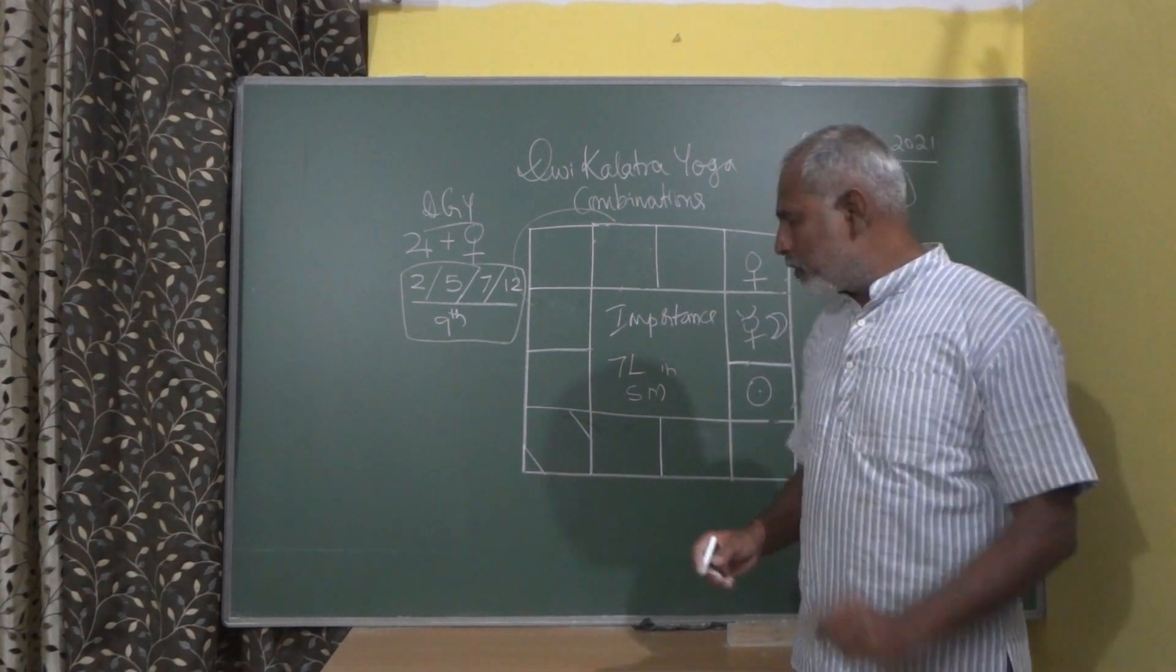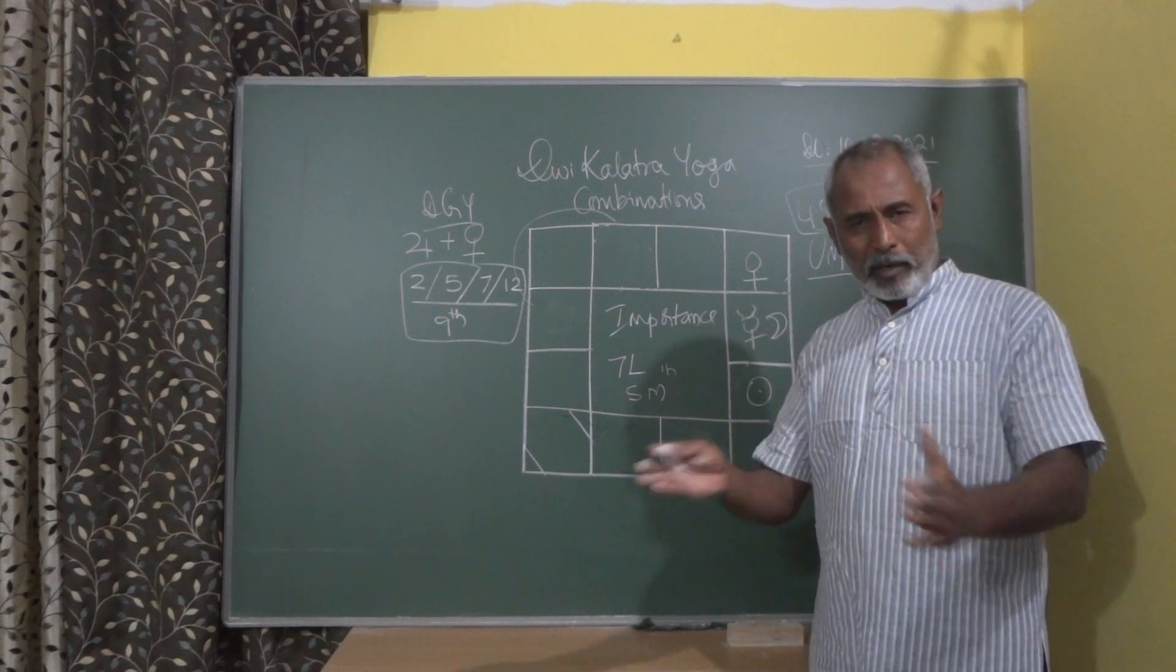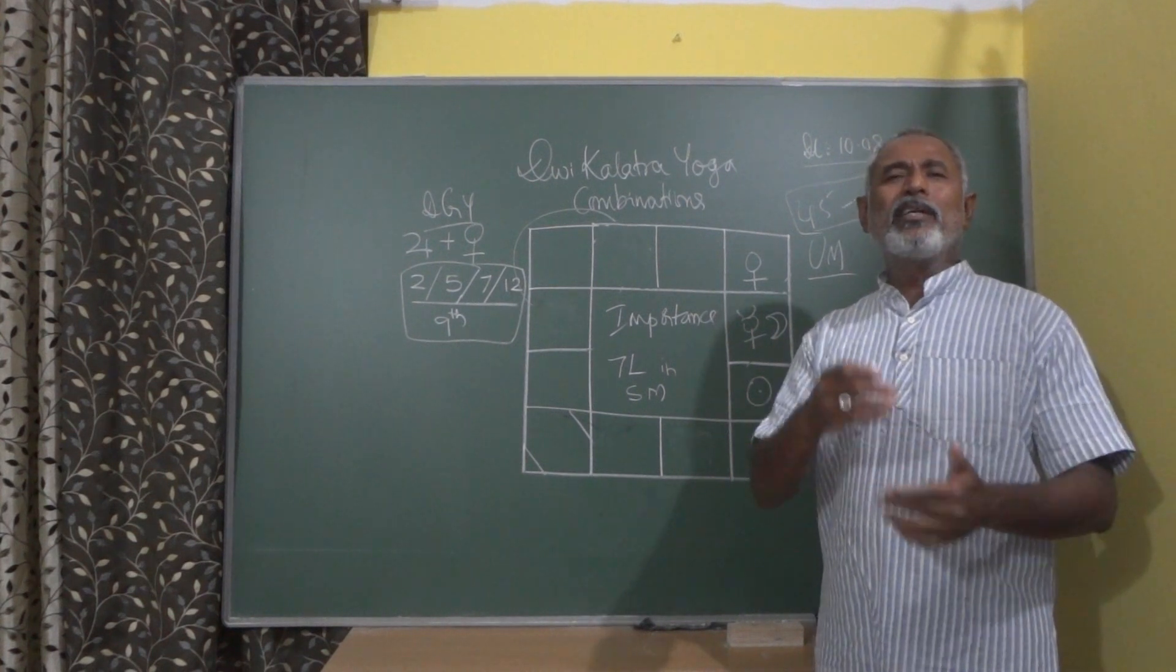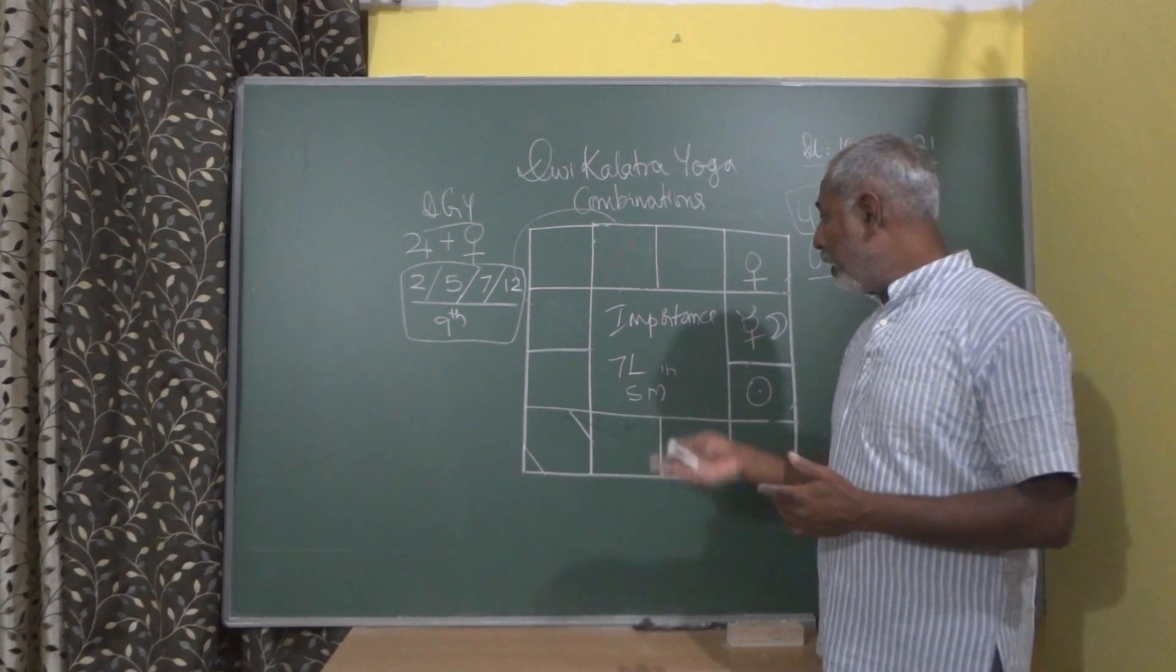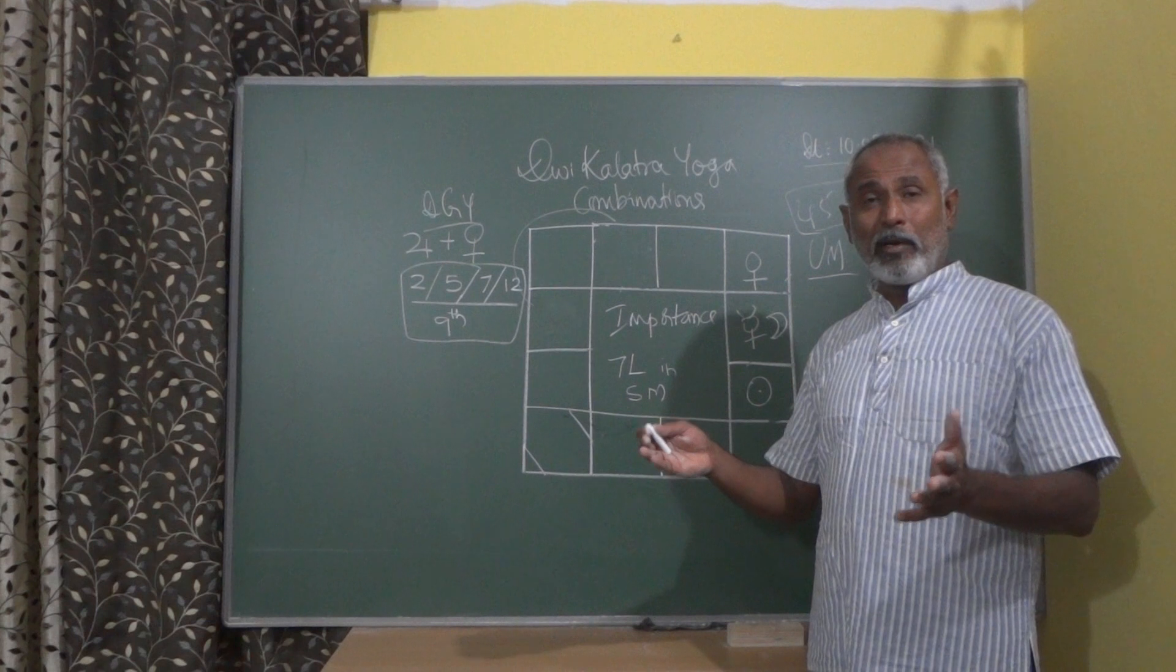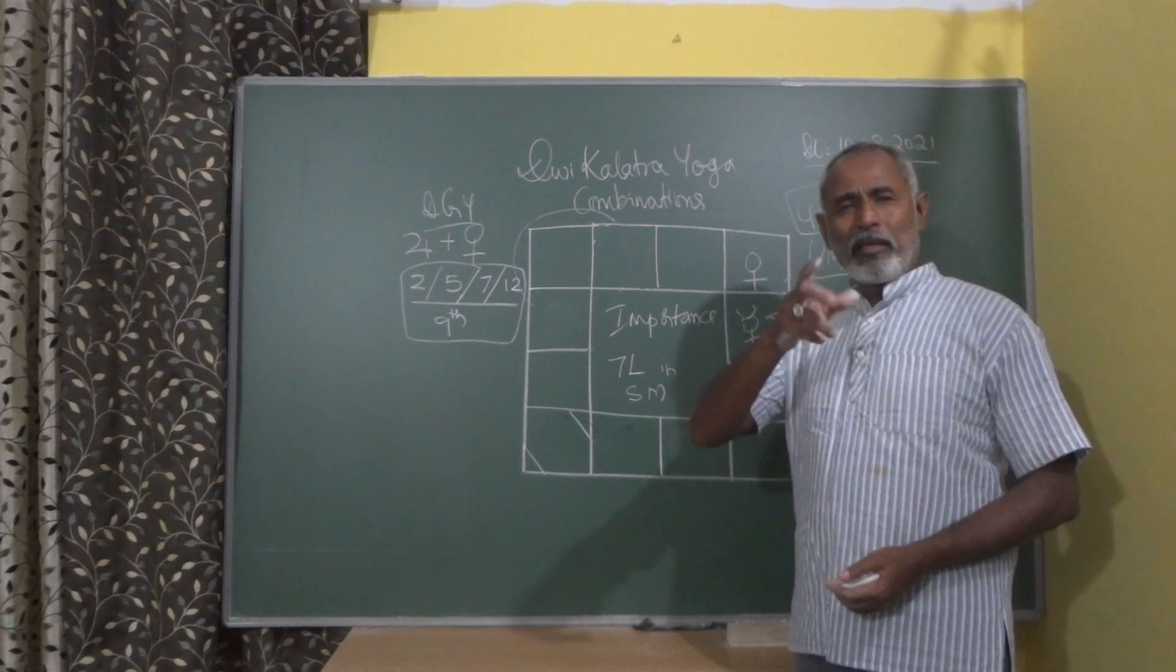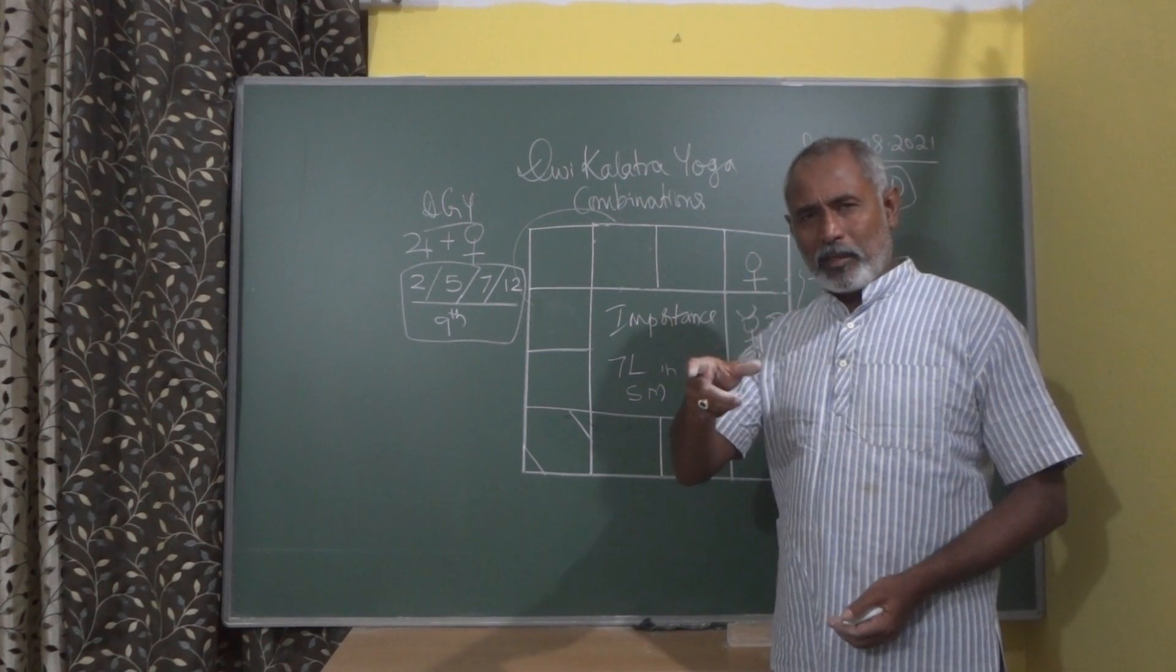So I have seen some cases with these types of combinations that the first marriage would break, but it will not get divorced, mind it. It will break by separation, by distance, maybe for a few years, let's say around two or five years, and then again the same two people, the couple, become one and they again start living. So this happens when the eighth Lord and the eighth house gets mixed up